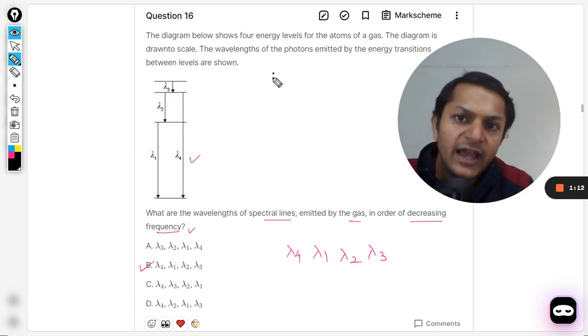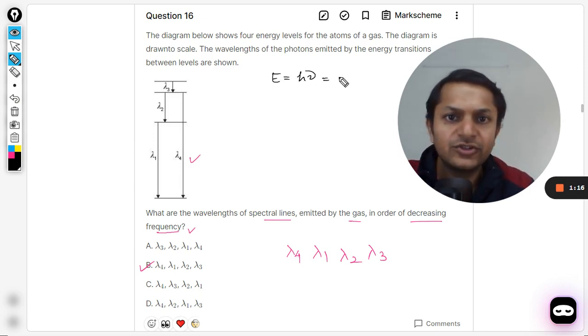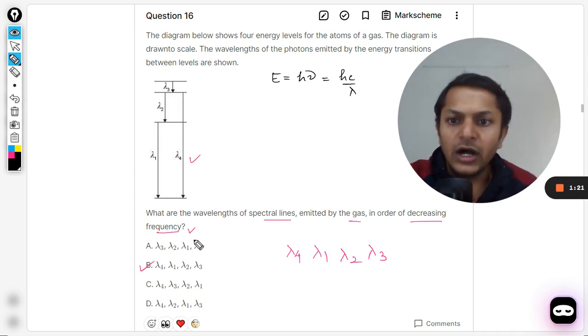The concept that I have used here - the energy which is liberated can be written as E equals h nu, or it can be written as hc by lambda.